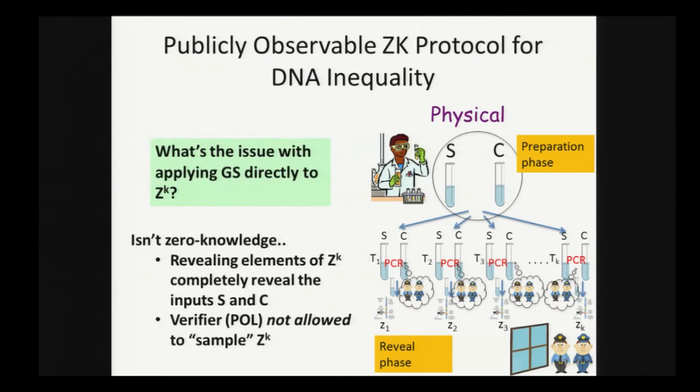But of course, the problem is, you can't do the second step of the Goldwasser-Sipser protocol, because you can't reveal vectors from z to the k to the police without compromising zero knowledge. In fact, they completely reveal what S and C are.